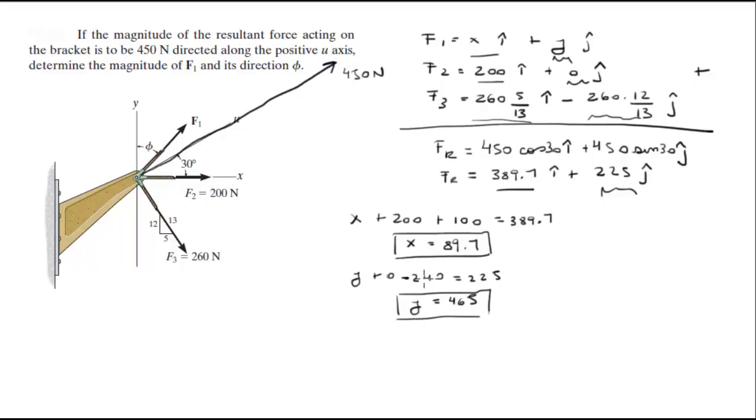Now that you got the x and y components of F of 1, all you got to do is find the magnitude. The magnitude is the x squared plus y squared square root it and this is equal to 473.6, that's the magnitude of F.